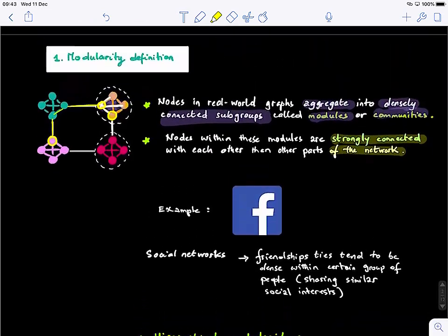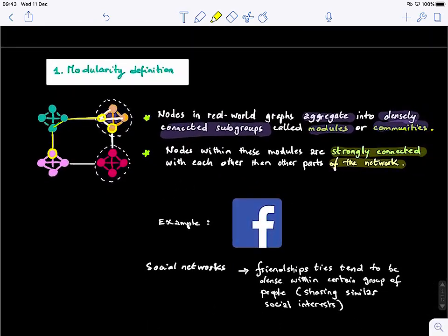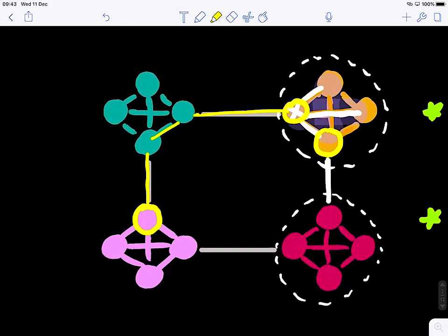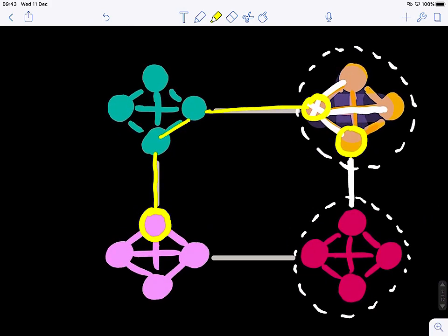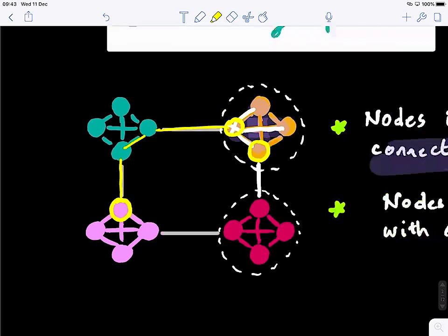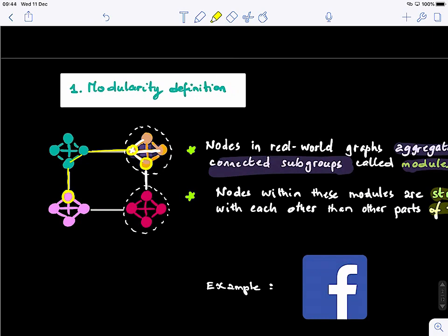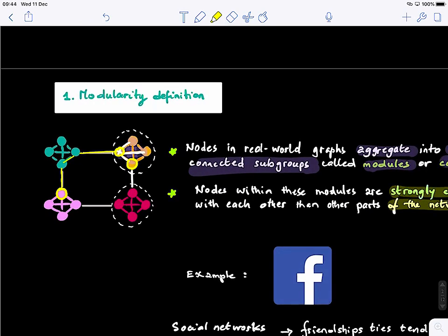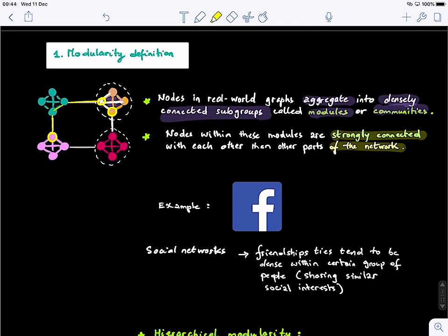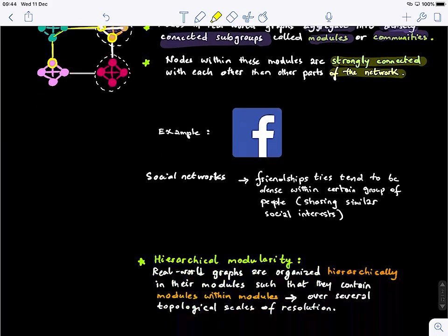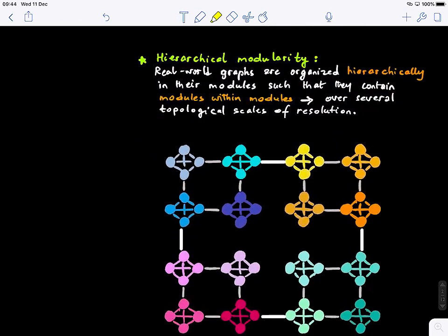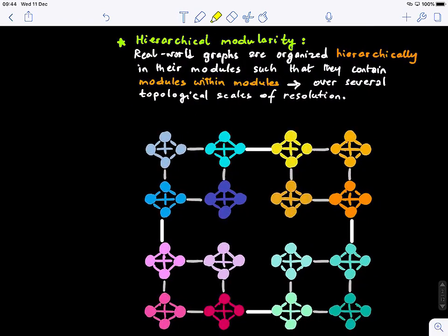You guys have other examples you can think of where we find graphs with different communities? Food web, yes. Any other things? So if you think about it, you'll discover that in the real world there are many graphs that comprise different modules and sub-modules.